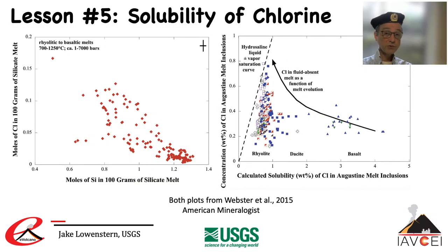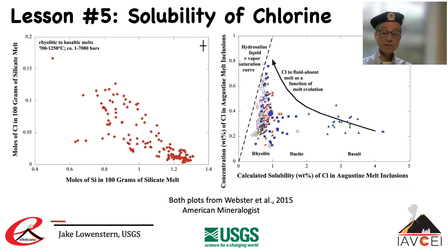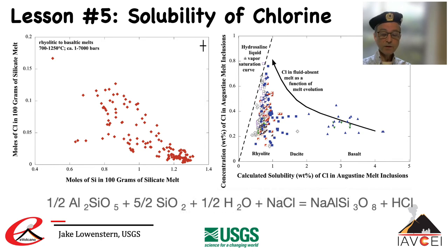Chlorine is much more soluble in basalt than in rhyolite, as is obvious in the plot on the left. Jim Webster did a lot of work on this topic and found that the ratio of total aluminum, magnesium, calcium, and sodium over silica tracks chlorine solubility in the melt. In his modeling, the rhyolites at Augustine volcano eventually saturate with vapor plus brine — labeled hydrosaline melt — a phenomenon inferred by others in papers throughout the years. One last point: the equation for HCl moves to the right as pressure is dropped, meaning HCl is increasingly volatilized at low pressure and the vapor leaving the magma becomes increasingly acidic upon cooling. Other halogens are also increasingly volatilized at low pressure.